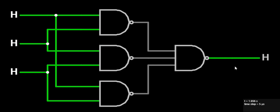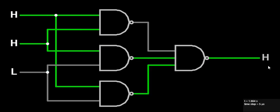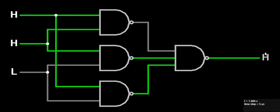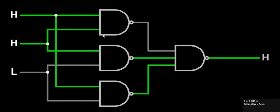If I make all three inputs high, the output will also be high. If I make any one input low, there will be no effect on the output because the majority of inputs is still high. As per the majority, the output will change according to the majority of the input. If high logic input is more, output will be high; if zero logic is more, output will be zero.